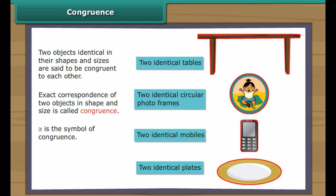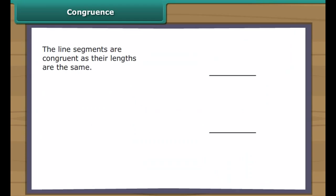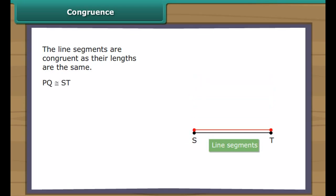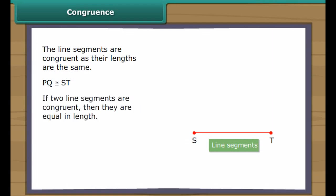This is the symbol of congruence. Here are two line segments, PQ and ST. We will check if they are congruent. The line segments are congruent as their lengths are the same. It is also true that if two line segments are congruent, then they are equal in length.